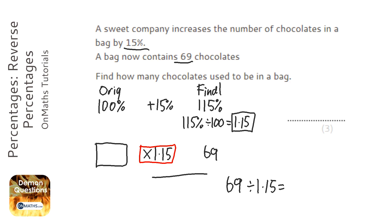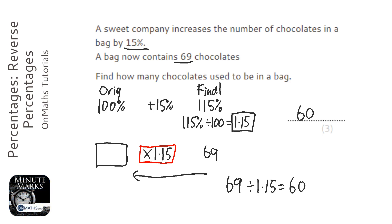We're going to divide by 1.15. I'll get my calculator out: 69 divided by 1.15 gives me the answer of 60. So there were originally 60 chocolates in the bag. You can then do 60 times 1.15 to check it works, and it comes up with the answer of 69.